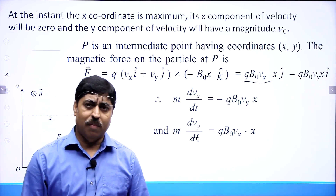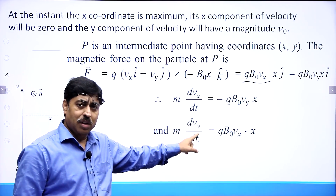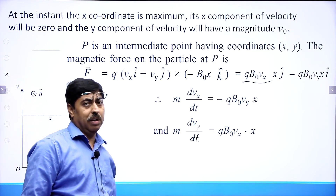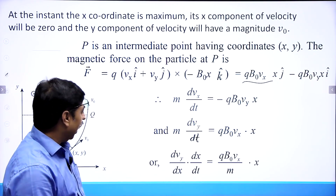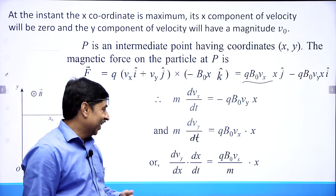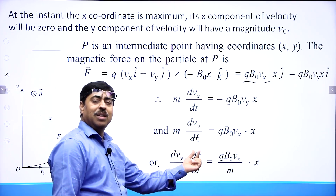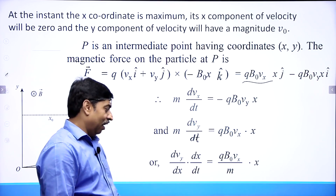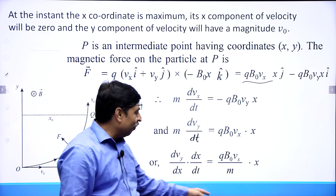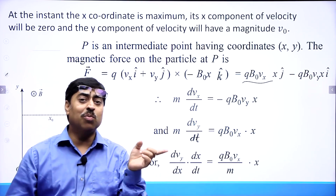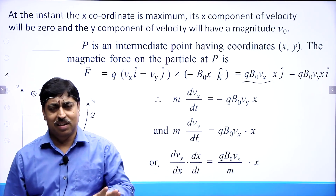Let us manipulate this equation. I do not want time in my equation, so I will use the chain rule of differentiation and write dVy/dt as (dVy/dx)(dx/dt). Now dx/dt is nothing but Vx. So Vx and dx/dt cancel out, and you are left with a relationship that only has Vy and x — which is exactly what we wanted. This manipulation — writing dVy/dt = (dVy/dx) · Vx and then cancelling Vx — is essential to solving this problem.